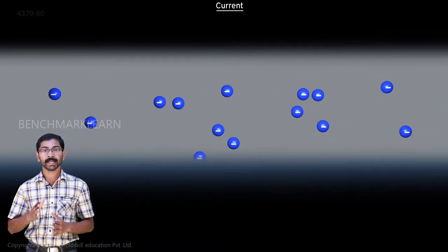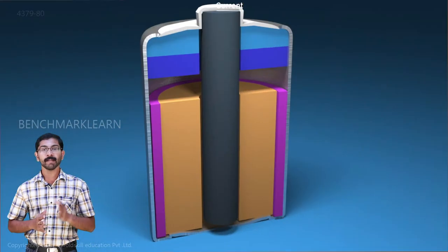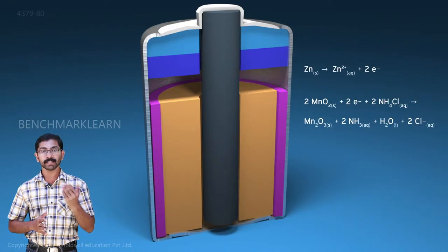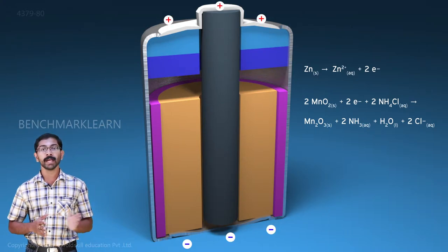This means that the net displacement of electrons is zero. Inside a battery, chemical reactions will cause an excess of electrons at the anode terminal and a deficiency of electrons at the cathode terminal.